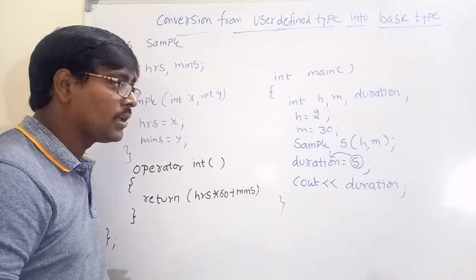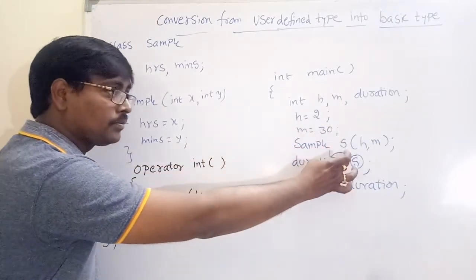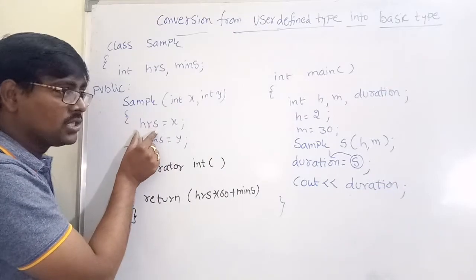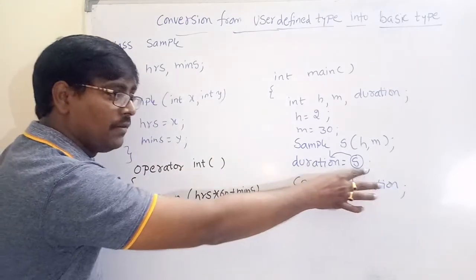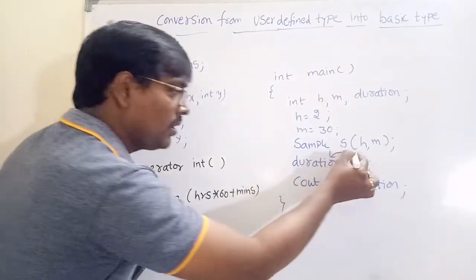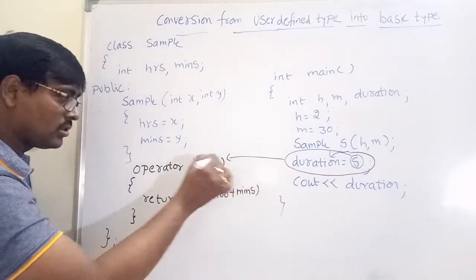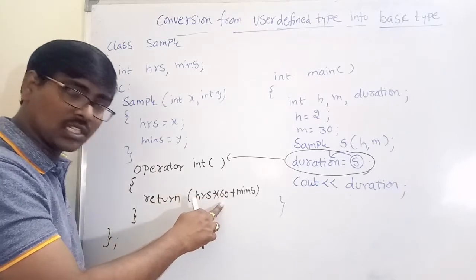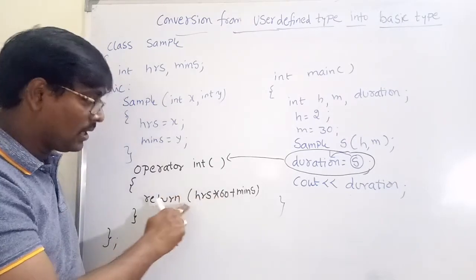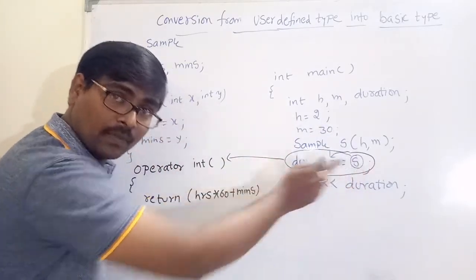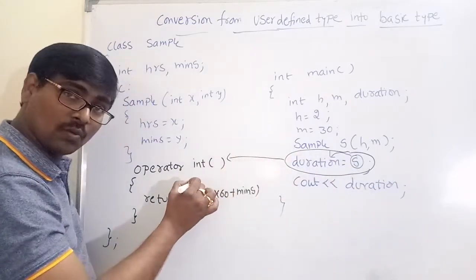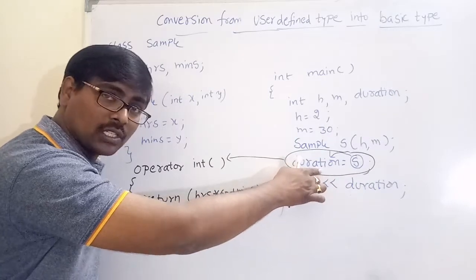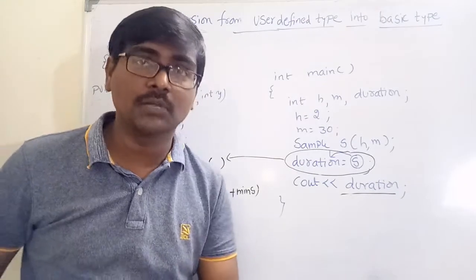Let's trace what happens. H is 2 and M is 30. When S(H, M) is called, hours is set to 2 and minutes is set to 30. Whenever we write the statement duration = S, the conversion operator is called. Inside it: hours * 60 = 2 * 60 = 120, plus minutes 30 equals 150. It returns 150, which is of type integer. So 150 is stored in duration and whenever you print the value, 150 is printed on the screen.